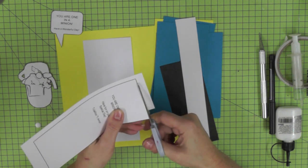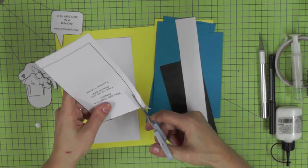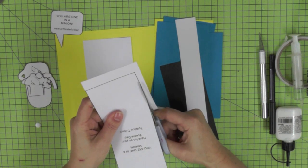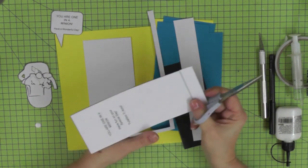Remember to cut out your template as neatly as possible because you can keep this and you can use this time and time again. Just pop it into an envelope and store it somewhere safe for the next person that you want to make a birthday card for that loves minions.